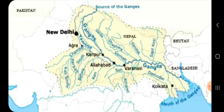As the stream of water goes down through the mountains, it washes away rocks and collects plenty of sediments. By the time it reaches the plains at Haridwar, it comes out of the mountains to the plains.